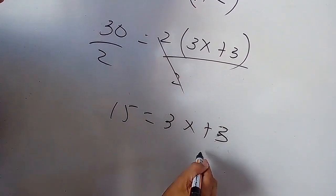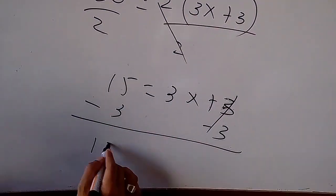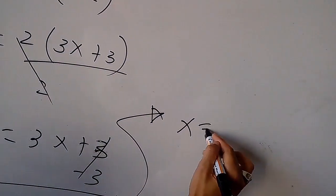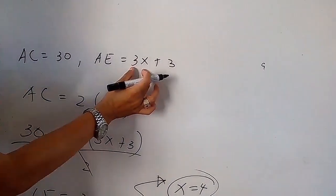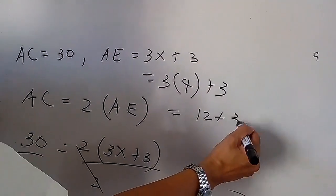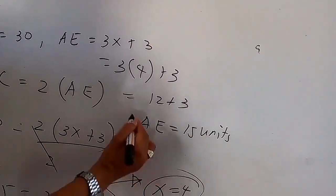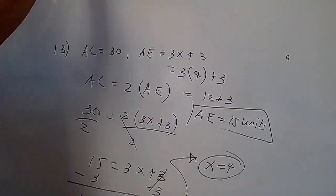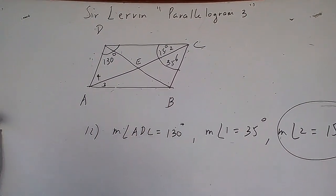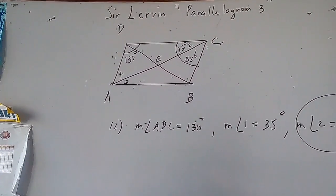Adding negative 3 to both sides: 12 equals 3X. Dividing both sides by 3, X is equal to 4. If X is 4, then AE equals 3 times 4 plus 3, which is 12 plus 3, so AE is equal to 15 units. We can check: since AC is 30 and diagonal BD bisects diagonal AC, AE equals 15 units. Correct!